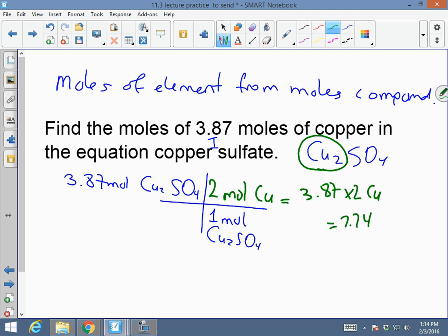That will be 7.74 moles of copper. Therefore, there are 7.74 moles of copper in 3.87 moles of Cu2SO4.